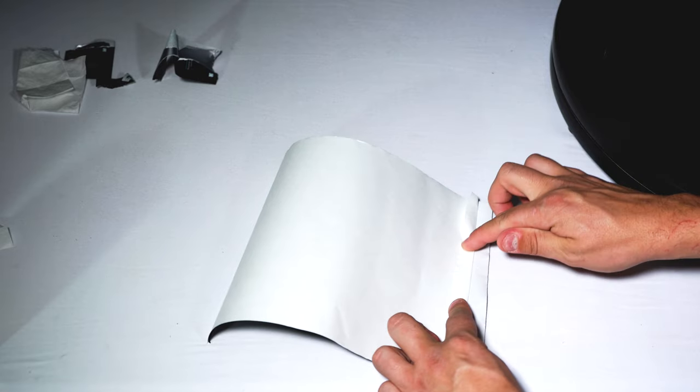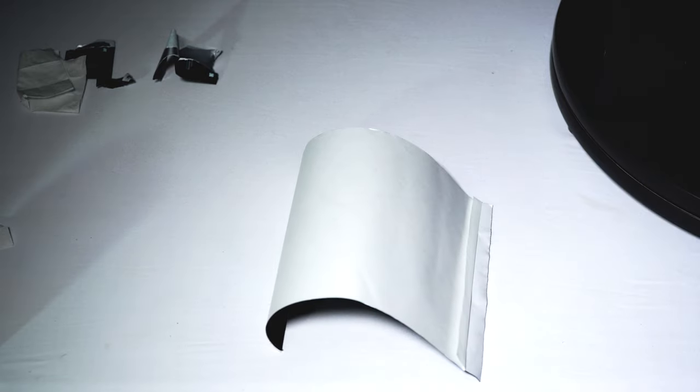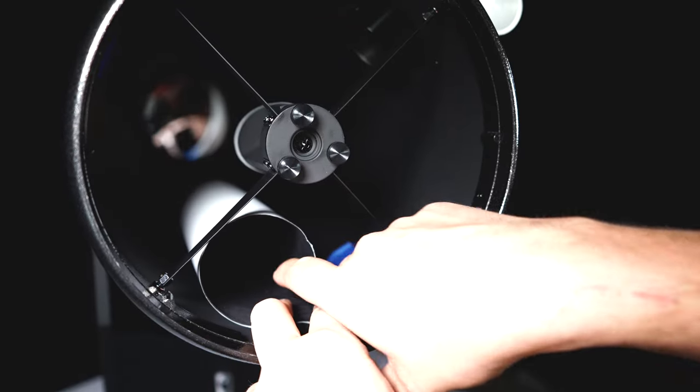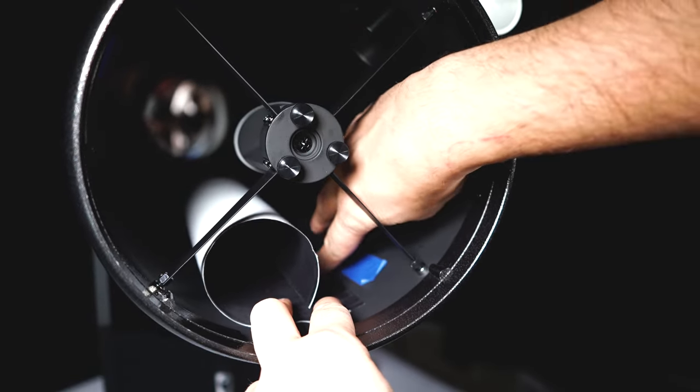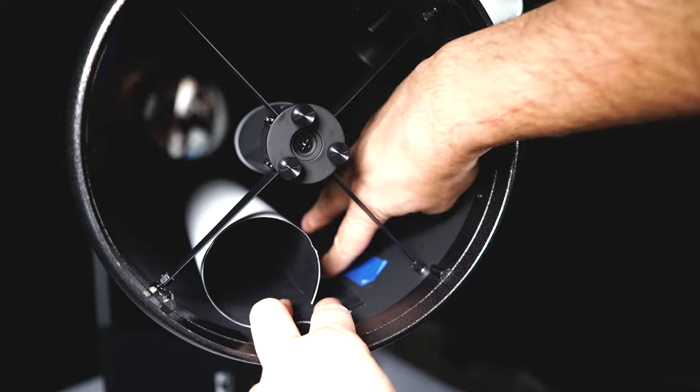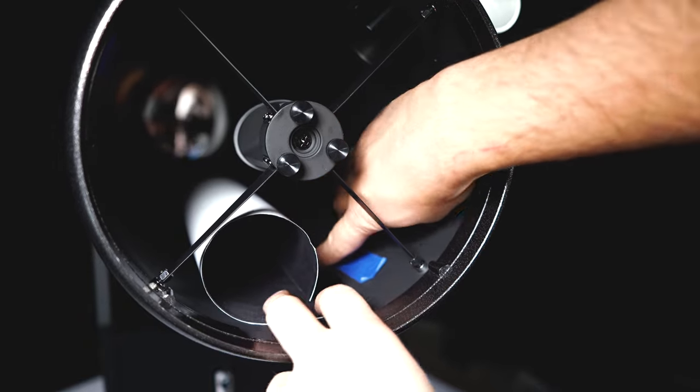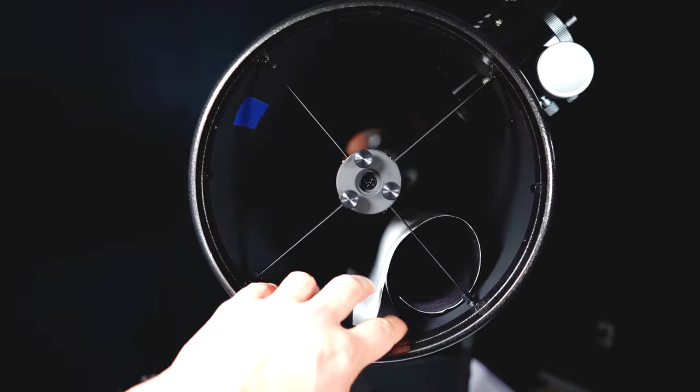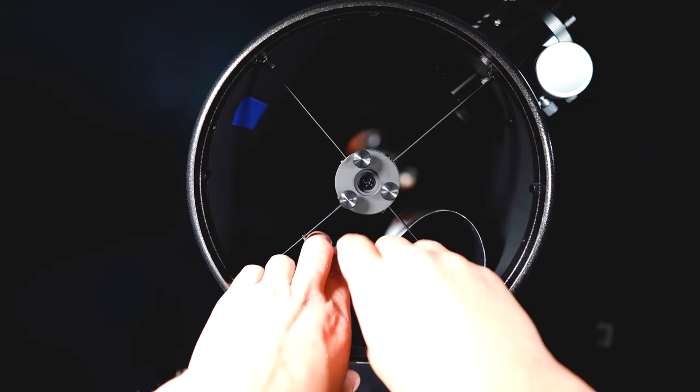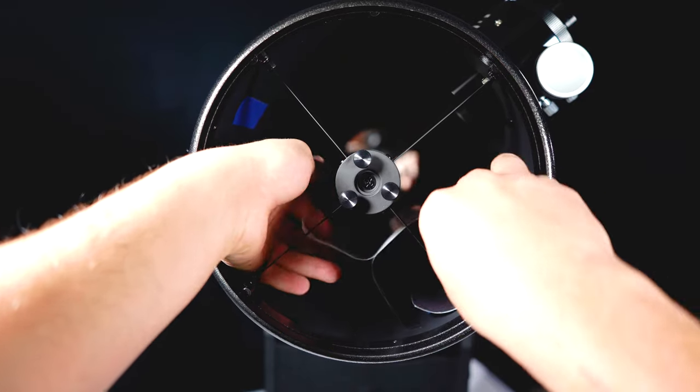Now once your tape is set and you are ready, peel the paper backing off the flocking paper about one quarter to one half inch and use your tape as a starting point. Press down along the edge so that the flocking paper has adhered to the tube. Slowly peel the paper backing while pushing the flocking paper against the side of the telescope.